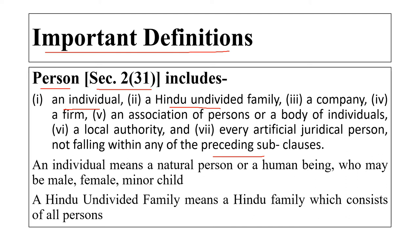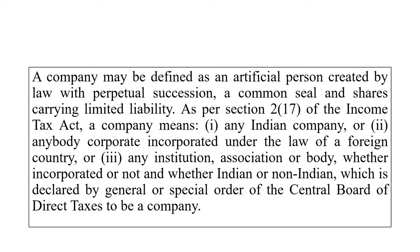An individual means a natural person or a human being who may be a male, female, or minor child. Hindu Undivided Family means the Hindu family which consists of all persons living in a joint family. A company may be defined as an artificial person created by law with perpetual succession, a common seal, and shares carrying limited liability. In simple words, a company means an organization created by people with common interest.